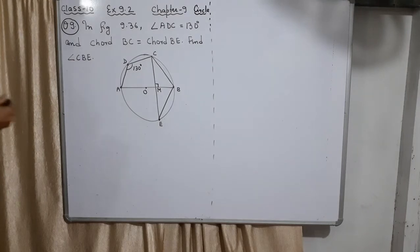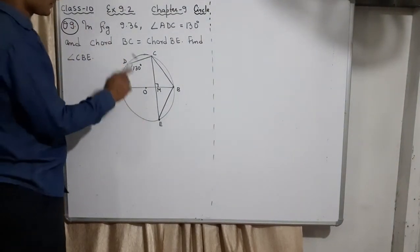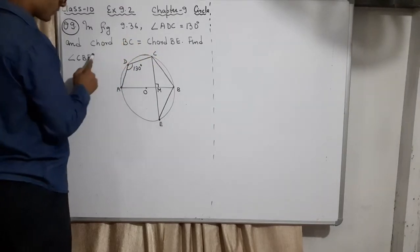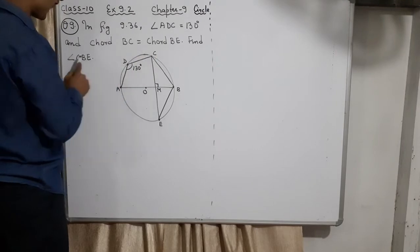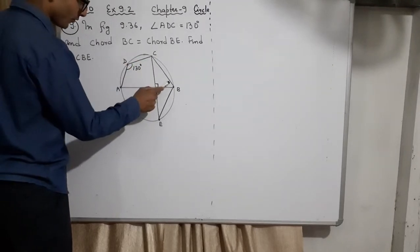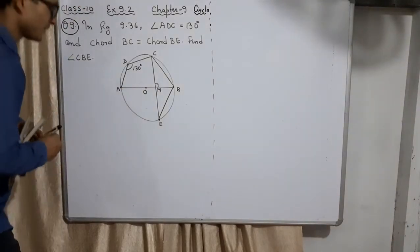Here we have angle ADC = 130 degrees given in the question. Diagram is also given. BC and BE are equal chords, means BC and BE are equal. Find angle CBE. Find angle CBE, this whole angle. This angle you need to find. Let's see.